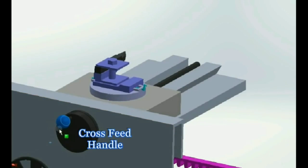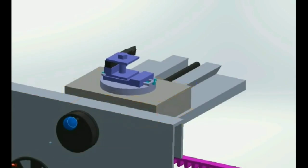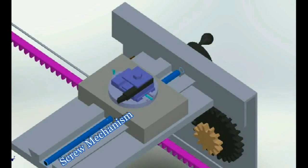On rotating the cross feed handle, the cross slide moves back and forth on the saddle because of the screw mechanism that connects the handle with the slide.